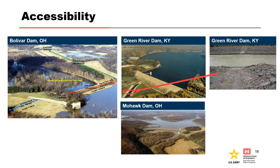Accessibility is a key consideration for the ability to intervene. Bolivar Dam's downstream toe is inundated by Dover Dam's pool, leaving a very narrow time window to mobilize and place a filter during a seepage incident. A low water crossing at the outlet channel of Green River Dam means large releases may prevent access to over two-thirds of the downstream toe; an access road was subsequently constructed over the conduit to address this. Access from the left abutment of Mohawk Dam will be cut off by spillway flow, and access from the right abutment will be cut off by roadways submerged by the reservoir. Emergency stockpiles of materials for flood fighting can become inaccessible and inundated as well.